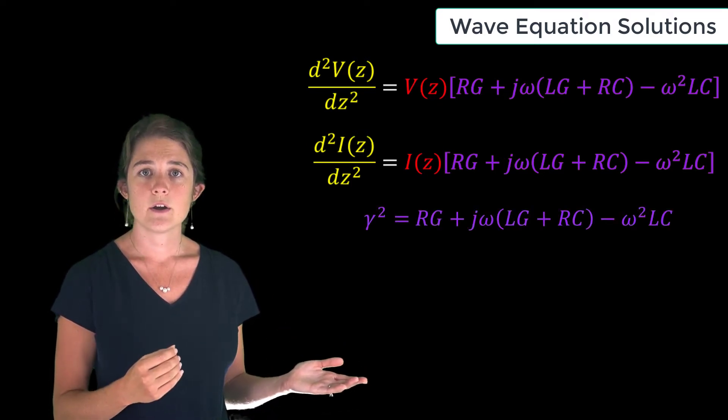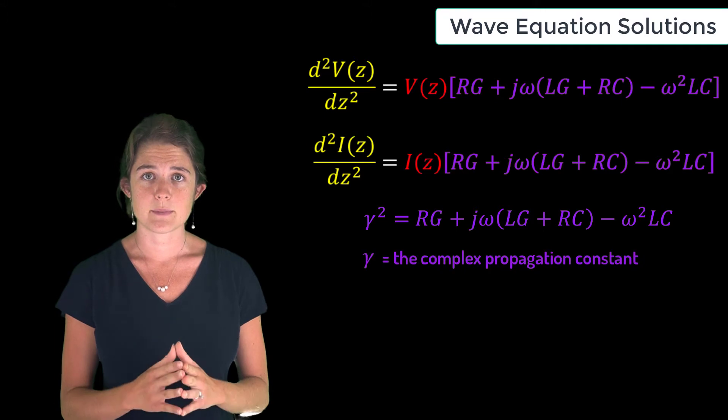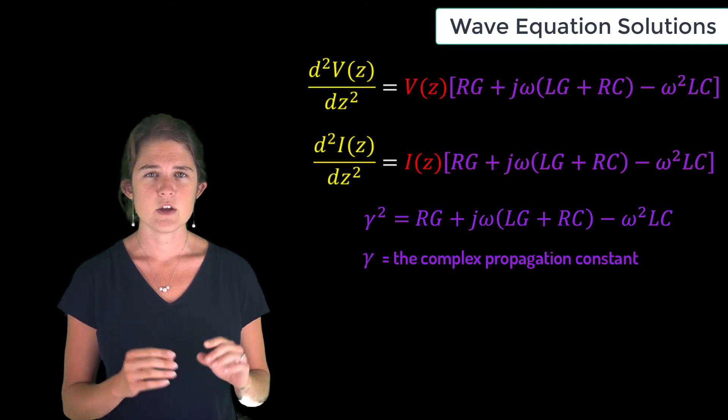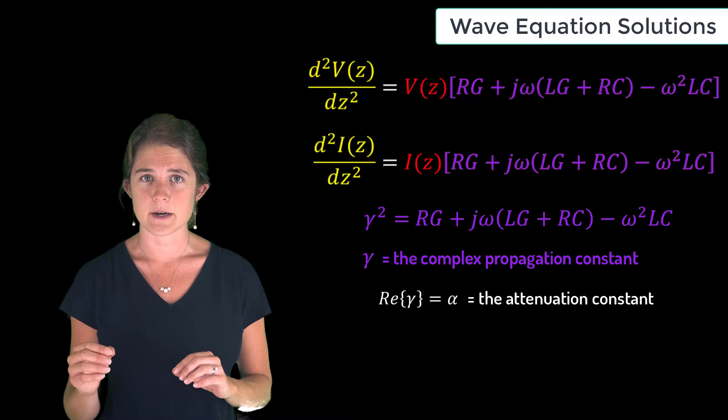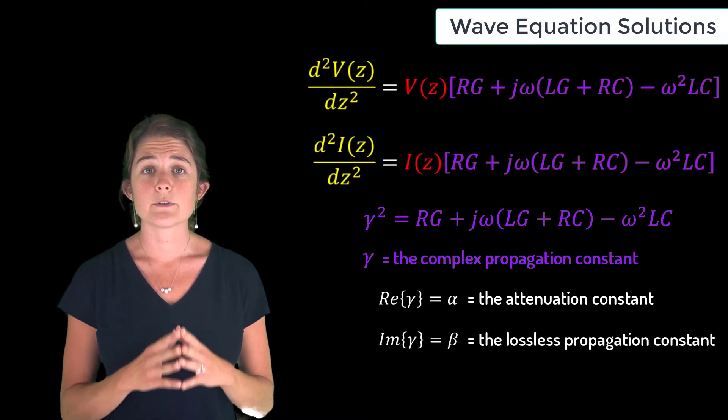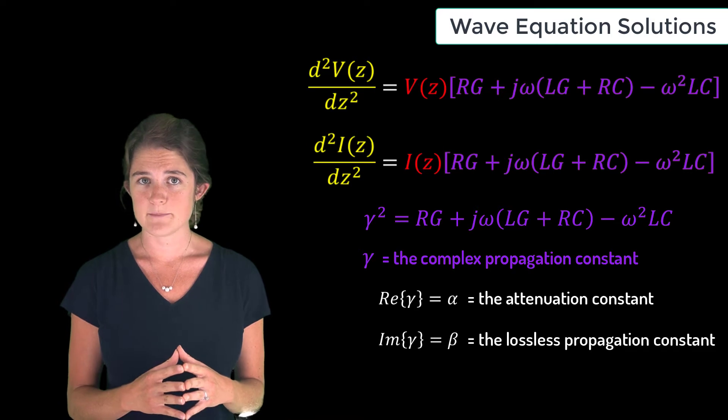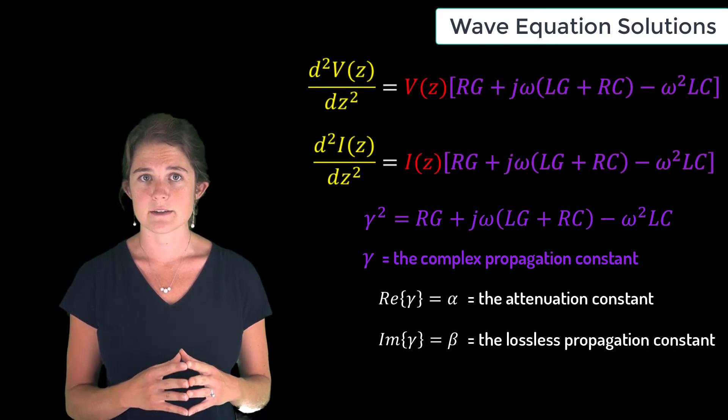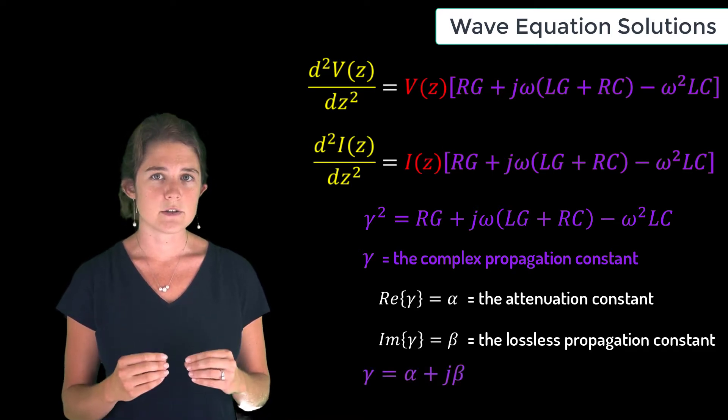gamma squared, where gamma is the complex propagation constant. We will also specially define the real part of gamma as alpha, the attenuation constant, and we'll define the imaginary part as beta, the lossless propagation constant. So gamma may also